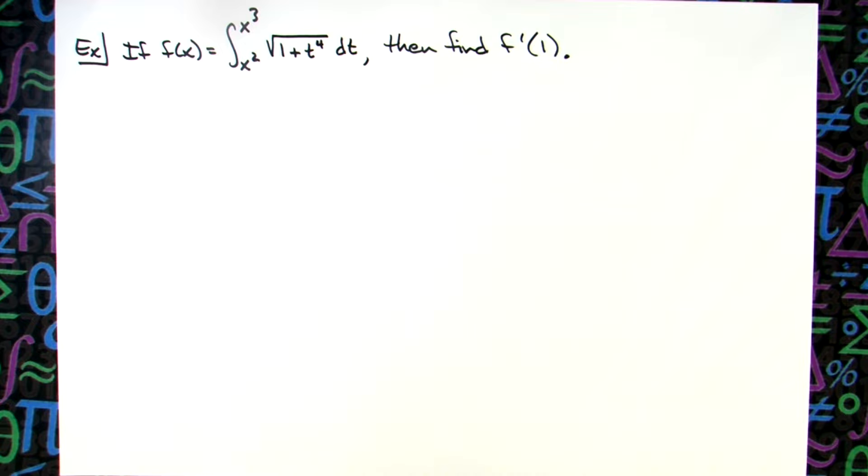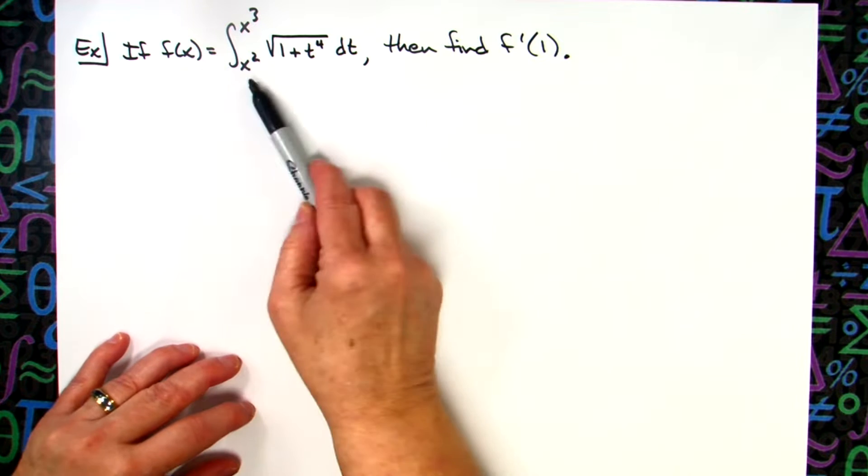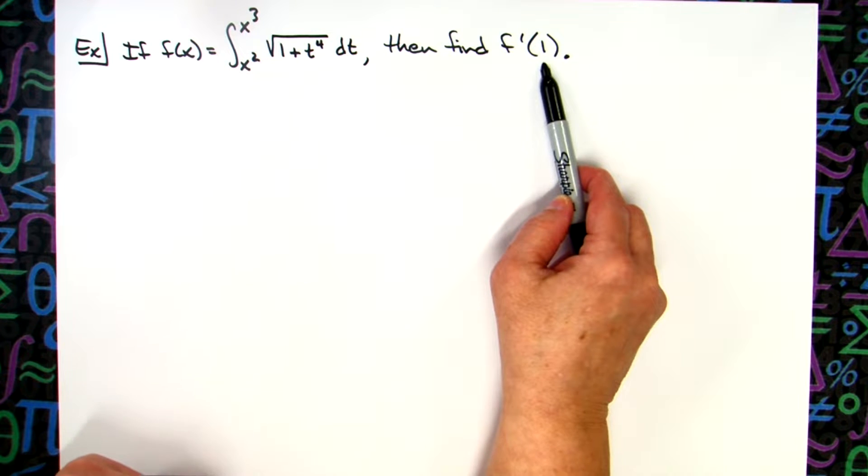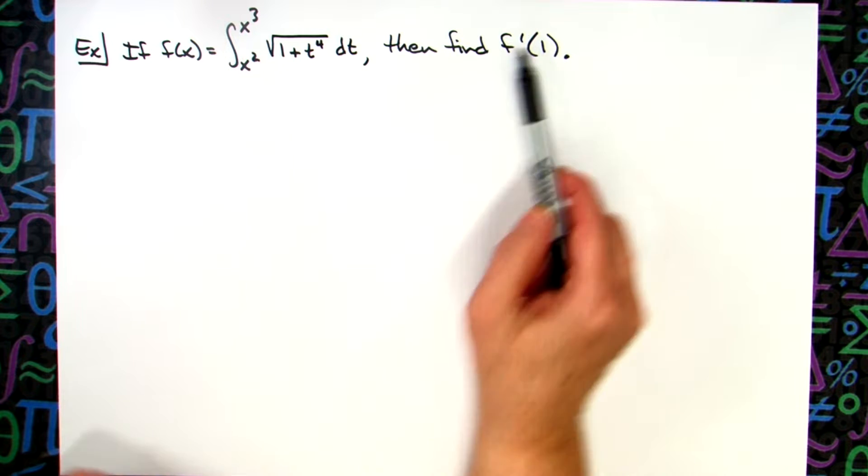Something like this, they could say, if f of x is equal to this integral, then find f prime of 1. So this would be finding a numerical value after you have taken the derivative of an integral.